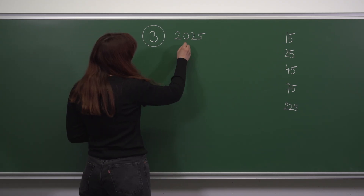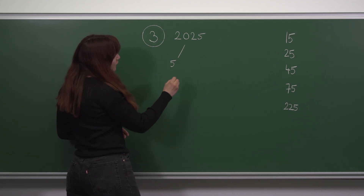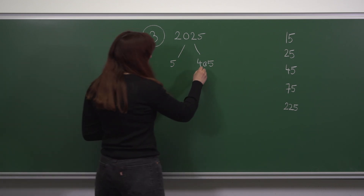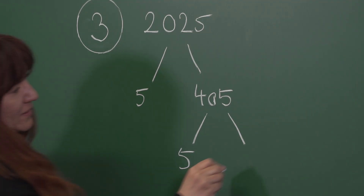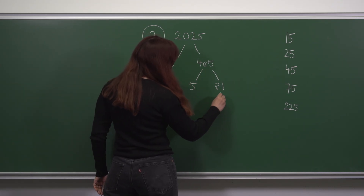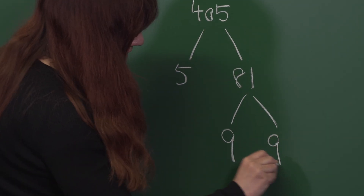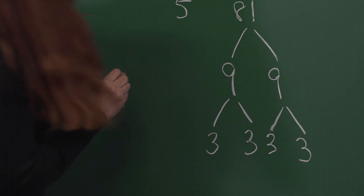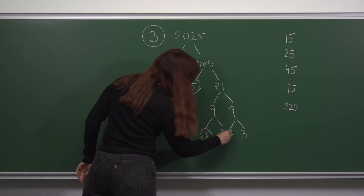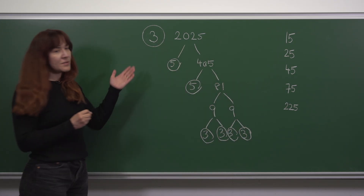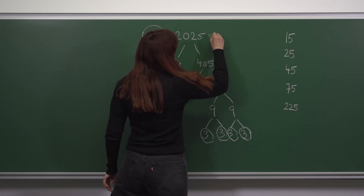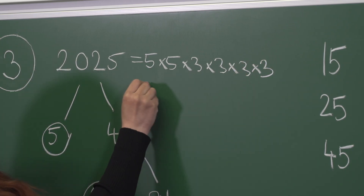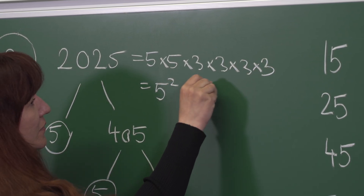An easy factor to spot is 5. 2025 is 5 times 405. Again, 5 is an easy factor to spot: 405 is 5 times 81. We know that 81 is 9 times 9, and 9 is 3 times 3. So 2025 is 5 times 5 times 3 times 3 times 3 times 3, or 5 squared times 3 to the 4th.